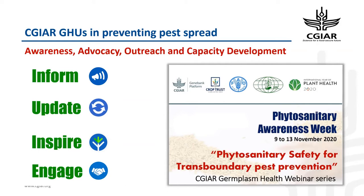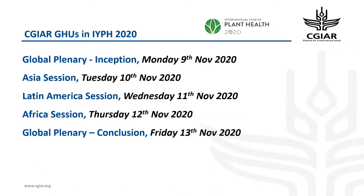We undertake phytosanitary awareness under four key objectives: inform, update, inspire, and engage. This year, coinciding with International Day of Plant Health, we are focusing the Phytosanitary Awareness Week on the topic 'Phytosanitary Safety for Transboundary Pest Prevention.' As part of this event, we are holding a webinar series every day, two hours, Monday to Friday. Today focuses on a Global Plenary as an inception. Tomorrow's session focuses on Asia, Wednesday on Latin America, Thursday on Africa, and we conclude Friday with a Global Plenary including summaries and a panel discussion to develop recommendations and a way forward plan.